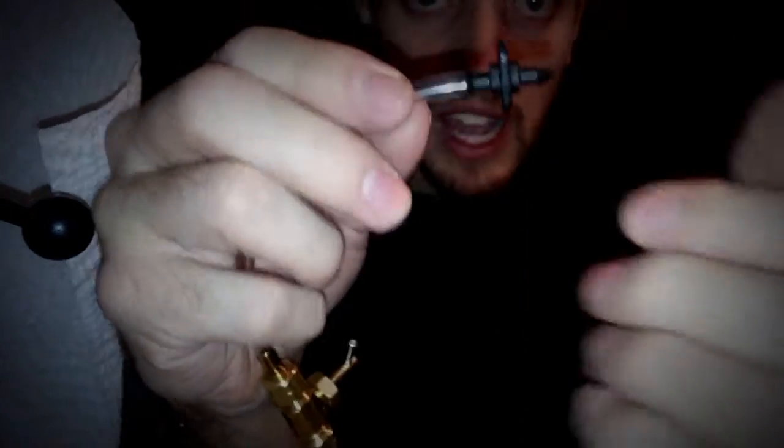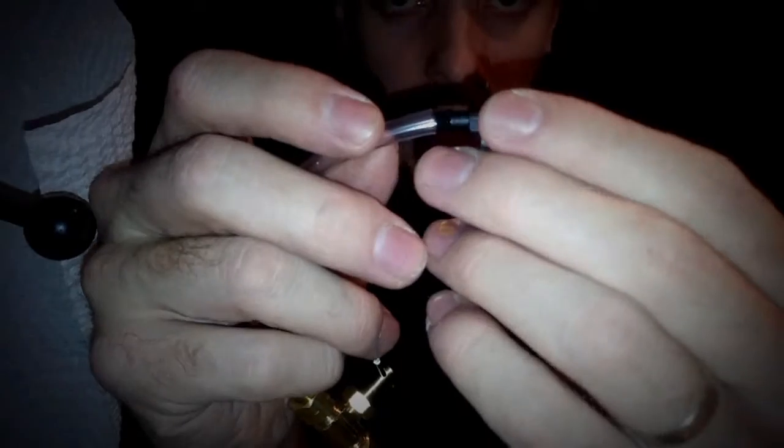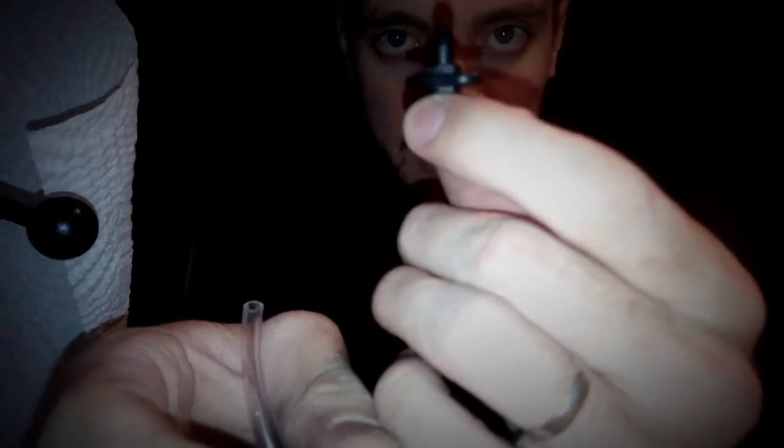So what I'm going to do is put this in one end like this. It's really tight, but I don't want any air, so I'm going to glue it. Then this is going to go in my CPVC, and I'm going to epoxy it in there.